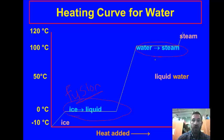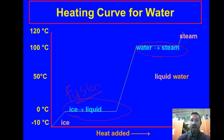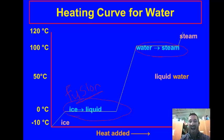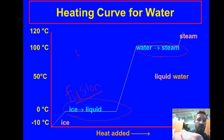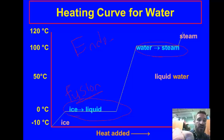Then we have the temperature of the water increasing. Then we have water going to steam — another word for that is vaporization. And then we have steam. We're adding energy throughout this process. Anytime we're adding energy, we would call this endothermic. Energy is being put into the system.